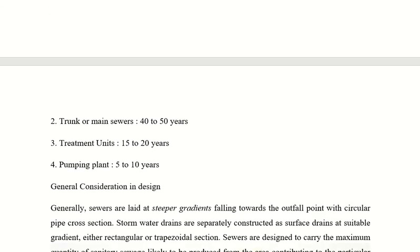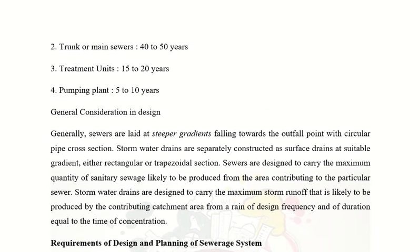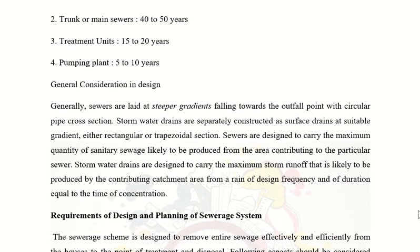In a separate sewer system, the sewer is separated from the stormwater collector, and the stormwater collector is separated from the sewer. This means both will be designed to their maximum capacity — the sewer will be designed to its maximum capacity and stormwater drains will also be designed to their maximum capacity.